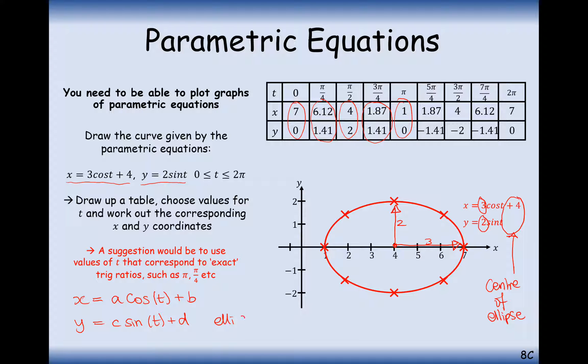This is going to be an ellipse with centre (b, d), the numbers that add on at the end, and x radius a, an x radius of a.